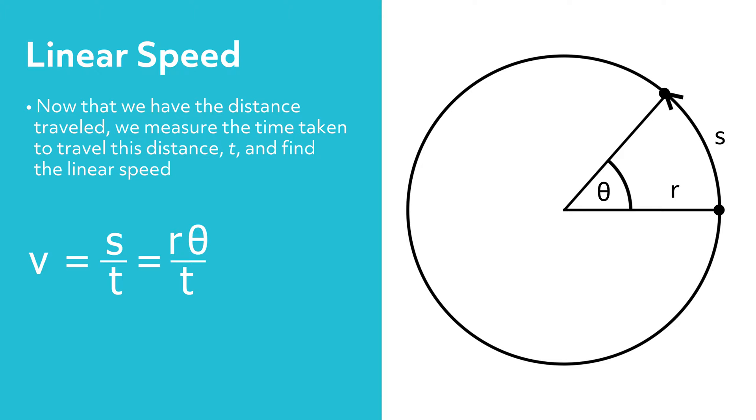Sometimes we know how fast something is rotating and we want to calculate the linear speed. Usually we know how many revolutions per minute the object makes, so let's connect rpm and linear speed.